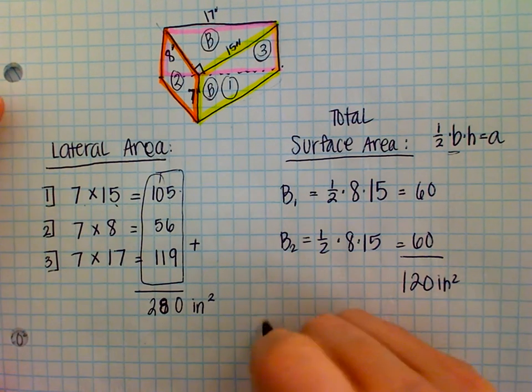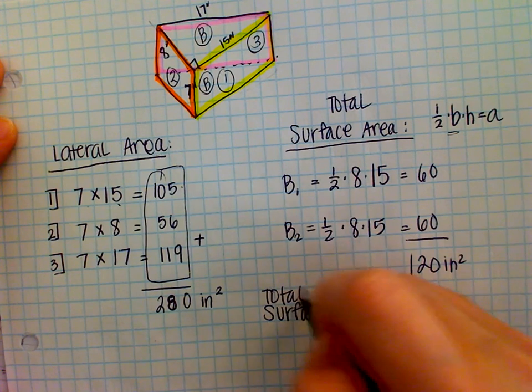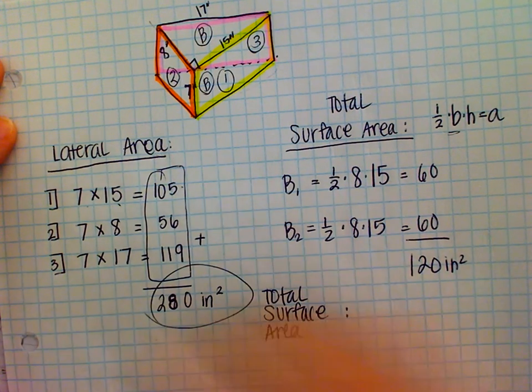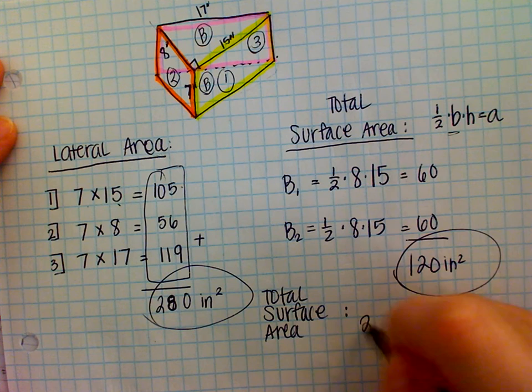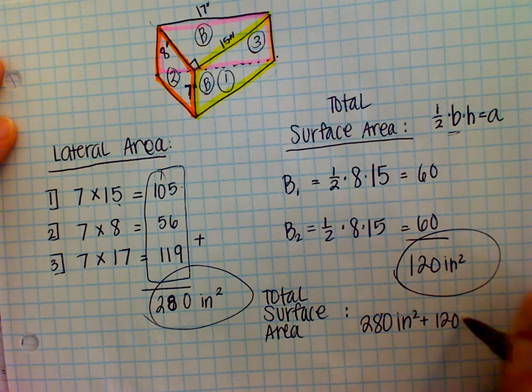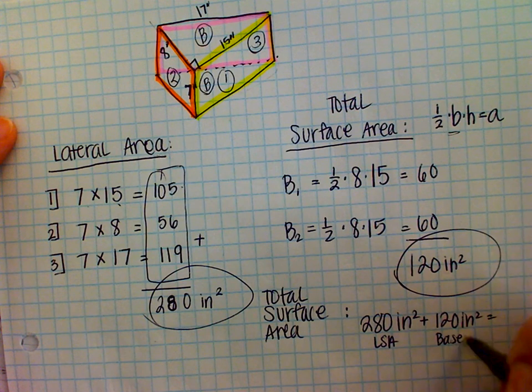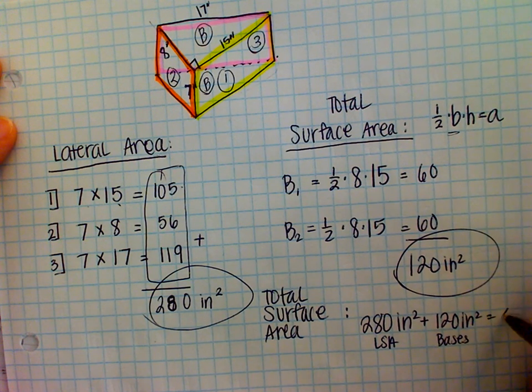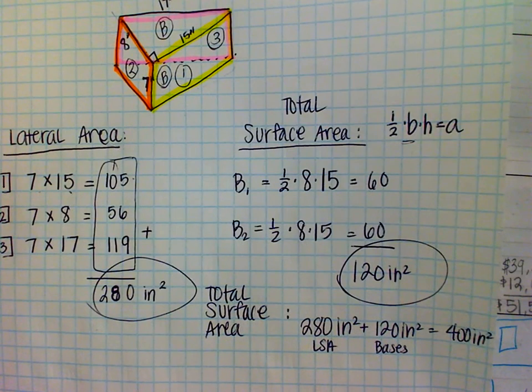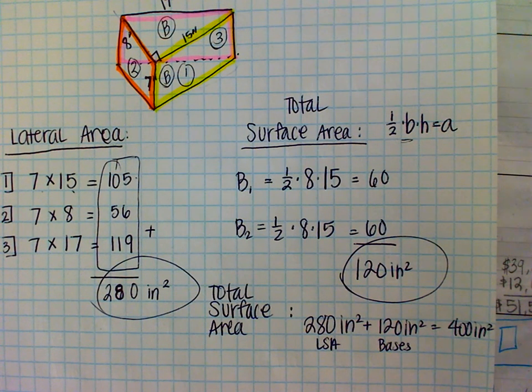So, our surface area, we are going to take 280 plus 120. This is our lateral surface area and this is our bases. We're going to add them together and I get 400 inches squared. Can I get a verification from someone with a thumbs up? I got that answer. All right.